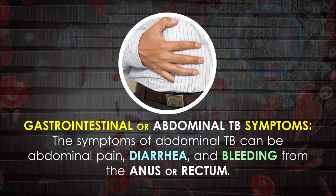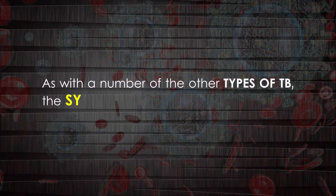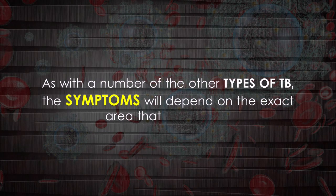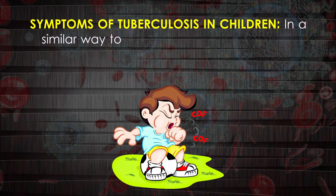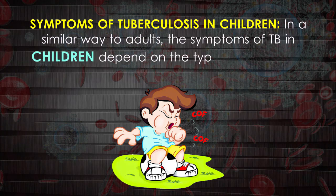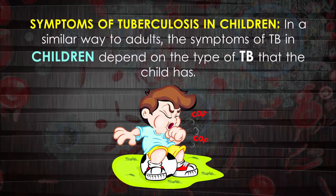Symptoms of gastrointestinal or abdominal TB can include abdominal pain, diarrhea, and bleeding from the anus or rectum. As with other types of TB, the symptoms will depend on the exact area that is affected.